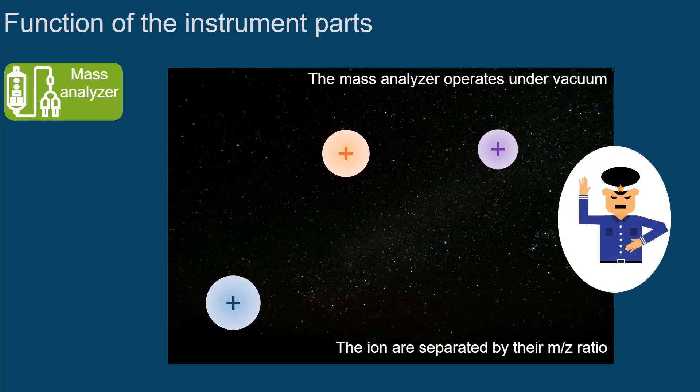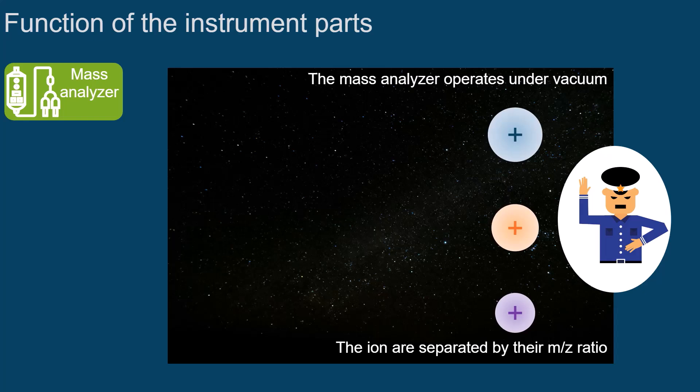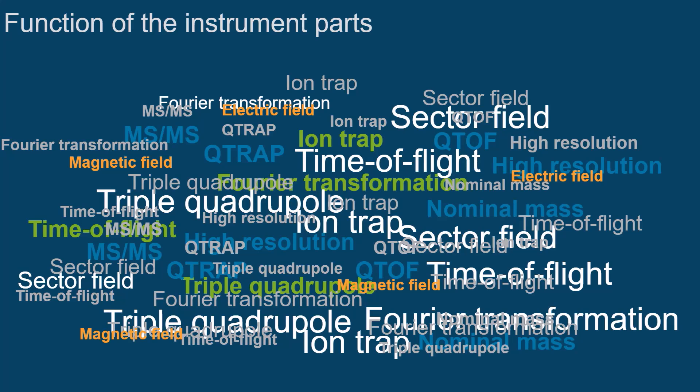Here, the molecular ions are separated based on their molecular mass or, more precisely, their mass-to-charge ratio. Several types of mass analyzers are available that use different physical principles to separate ions with different M over Z ratios.